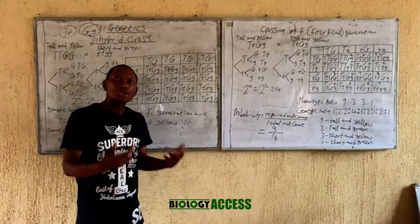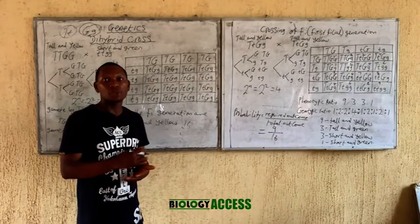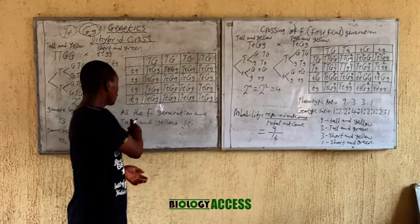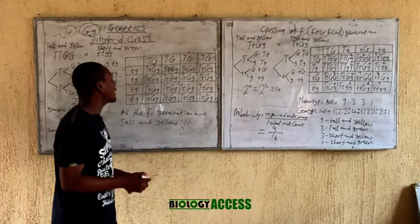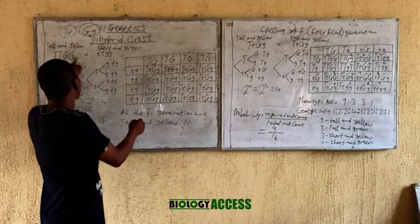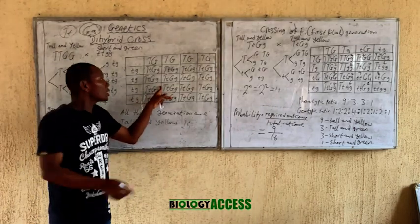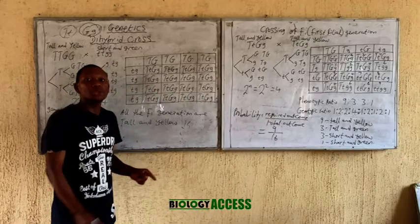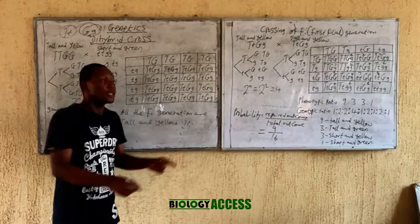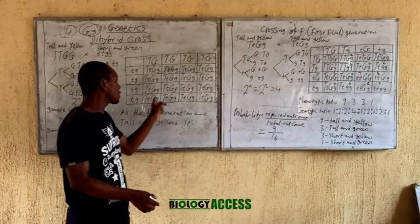The probability of having a short and yellow pea plant is zero — we have none here. The probability of having anything other than tall and yellow is zero. We can now decide to cross this F1 generation with itself. Crossing the first filial generation gives you the second filial generation, which you can think of as the grandchildren.